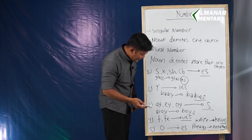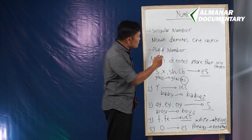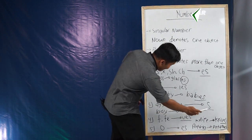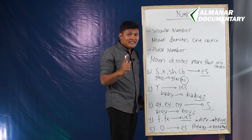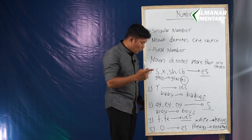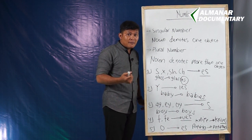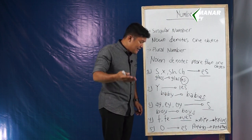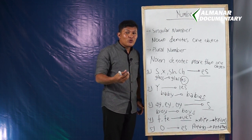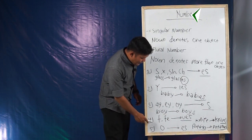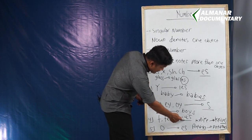'Duty' (satu kewajiban) berubah menjadi 'duties'. Yang ketiga, jika akhiran singular adalah AY, EY, atau OY, maka kita hanya perlu menambahkan S. Misalnya 'boy' menjadi 'boys', 'prey' (musuh) menjadi 'preys', dan 'bay' (teluk) menjadi 'bays'.